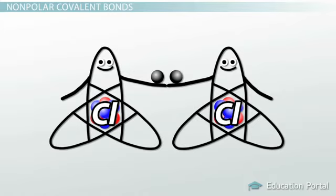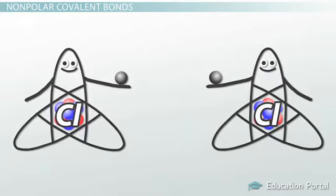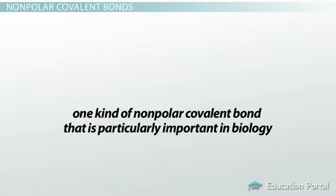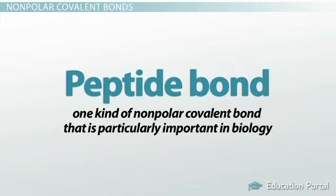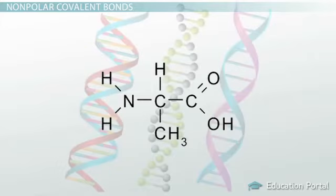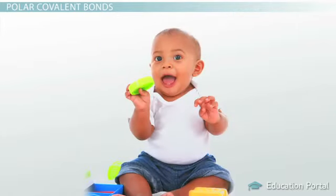Nonpolar covalent bonds are very strong bonds, requiring a large amount of energy to break. They are extremely important in biology — they form the oxygen we breathe and help make up our living cells. One kind of nonpolar covalent bond important in biology is called a peptide bond, which joins together chains of amino acids involved in the construction of our DNA. Amino acids are comprised of several atoms like carbon, oxygen, nitrogen, and hydrogen.